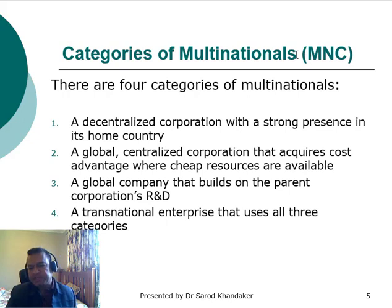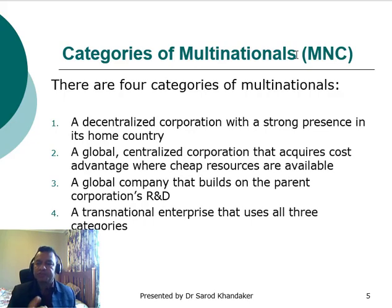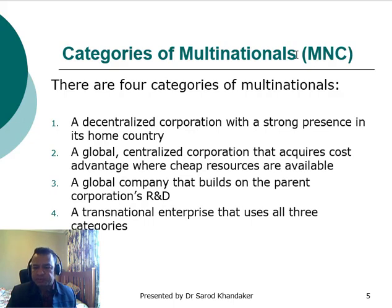There are basically four different categories of multinational corporations. Number one is a decentralized corporation with a strong presence in its home country — for example, Audi or Mercedes-Benz. Number two is a global centralized corporation that exploits cost advantages where cheap resources are available — think Apple as an example of this second category.